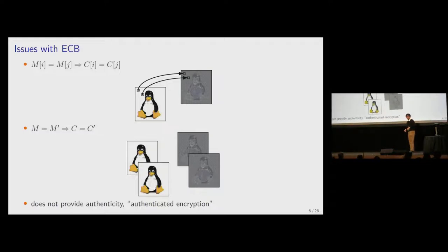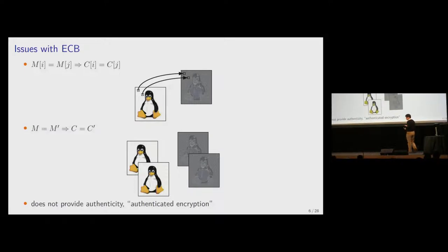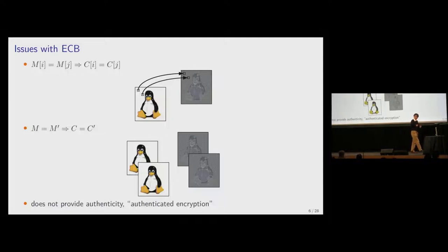One more issue is that ECB doesn't provide authenticity of data, meaning that if the ciphertext is manipulated, there is no way to detect the manipulation, and the ciphertext is just decrypted into a wrong plaintext. In order to securely encrypt and authenticate data, we need to use an authenticated encryption scheme.